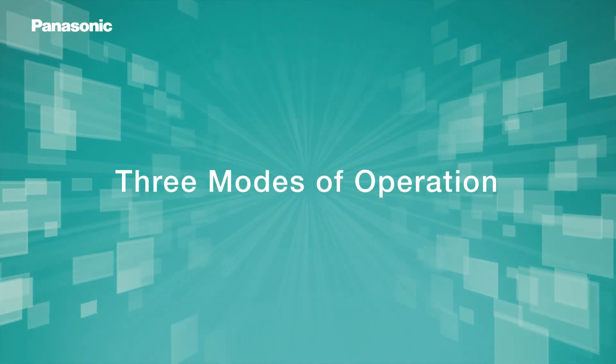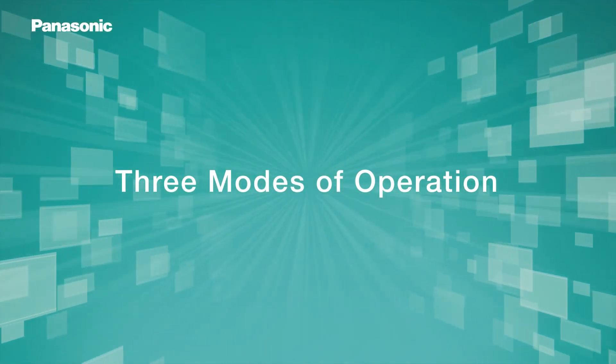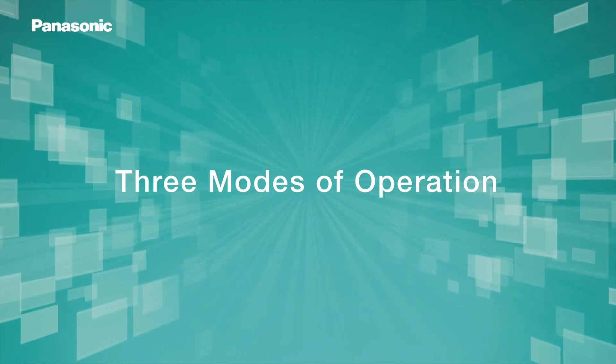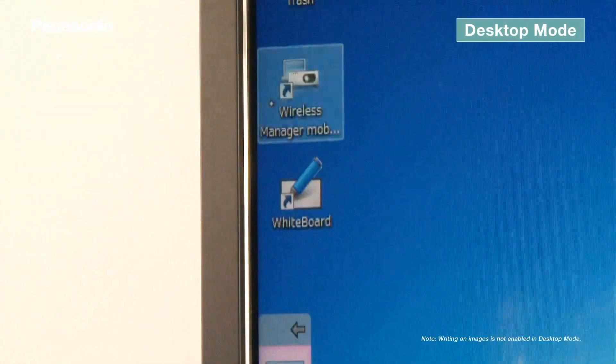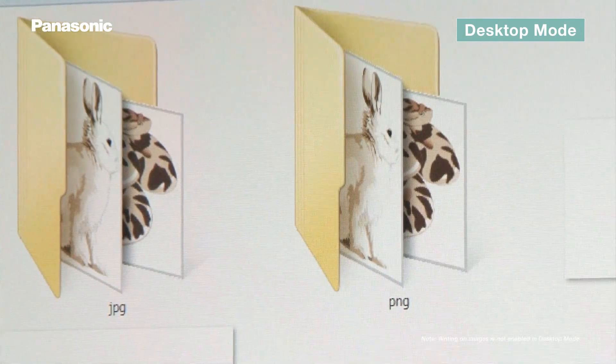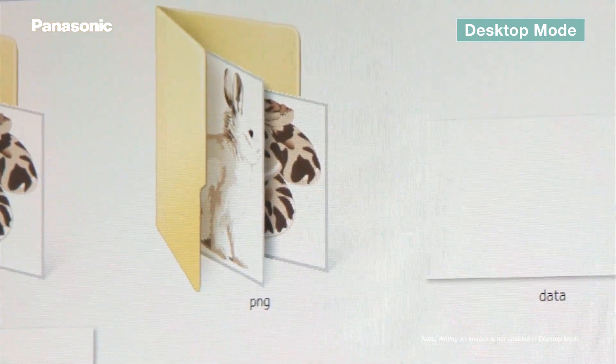Whiteboard software has three operational modes. In desktop mode, files on PC are displayed on screen. You can tap on the icon to open the files.